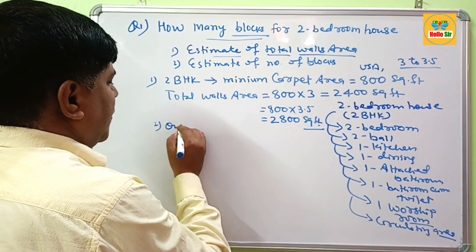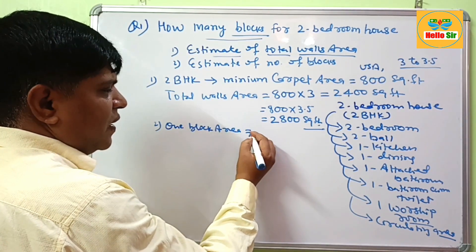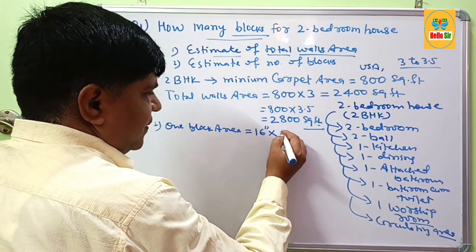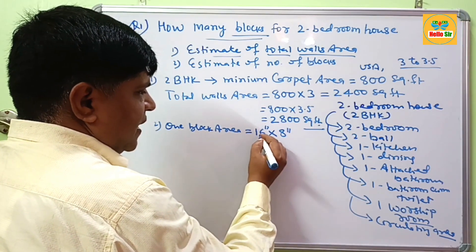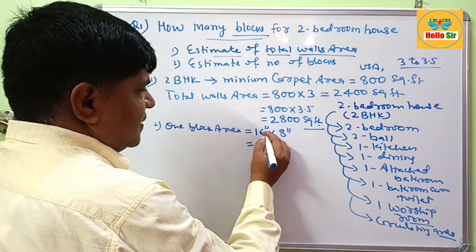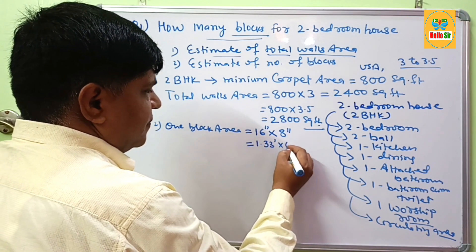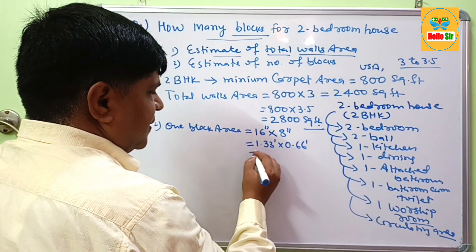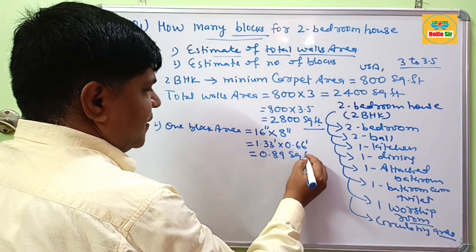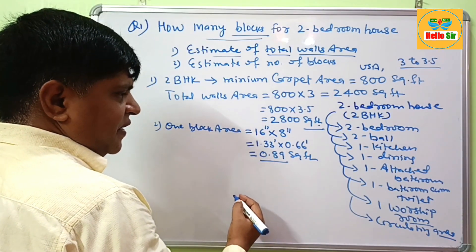One block area equals 16 inches multiplied by 8 inches — the length and height of the block. Converting to feet: 1.33 feet × 0.667 feet, which gives approximately 0.89 square feet. So one block area is about 0.89 square feet.